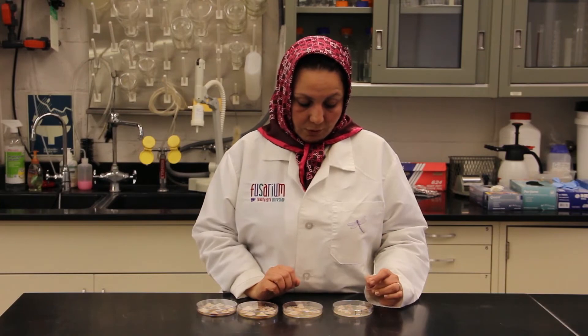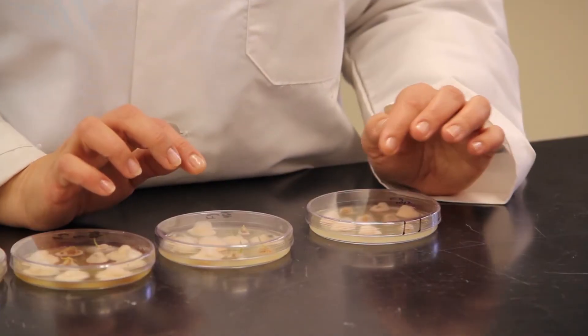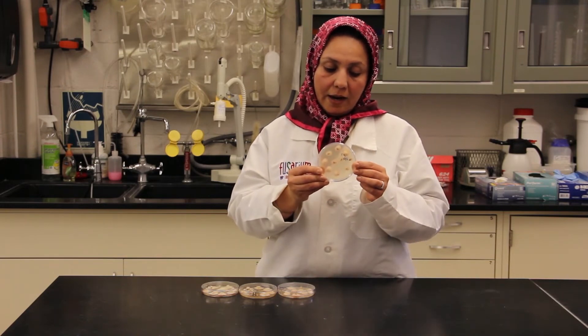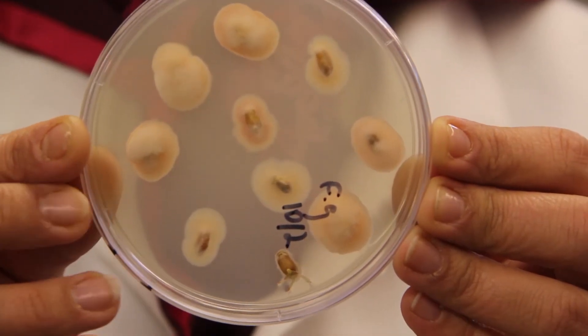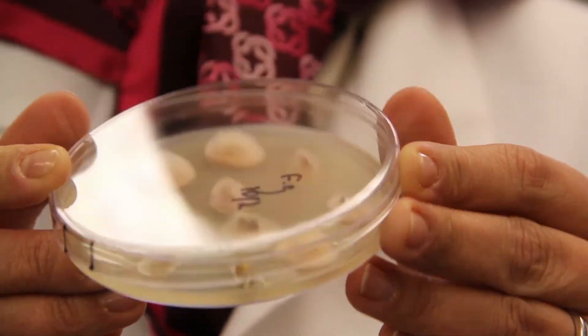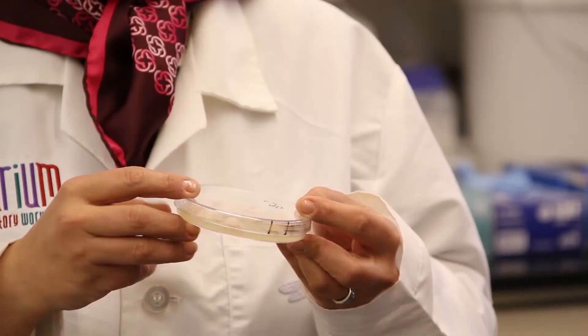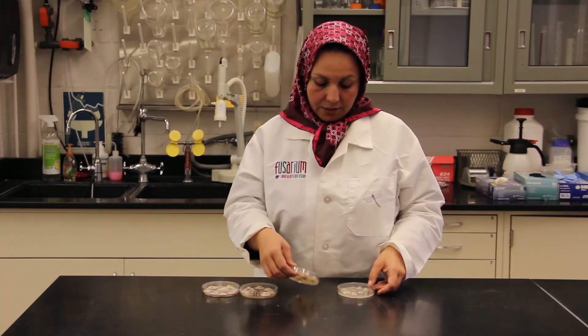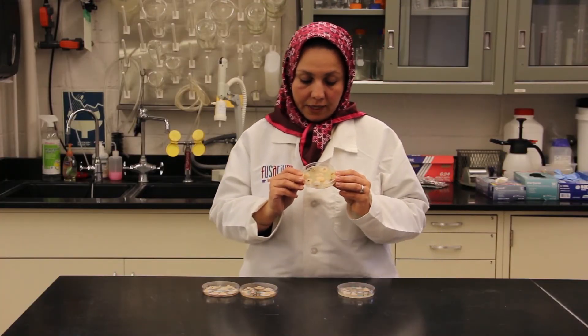This is the plate after five days of plating the seeds. Now you can see the color on the bottom and on the top of the plate. And this is after eight days.